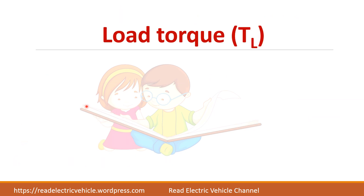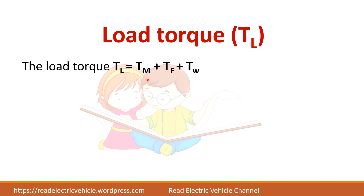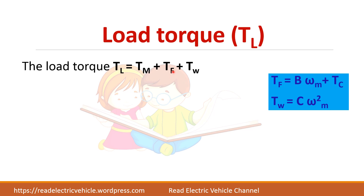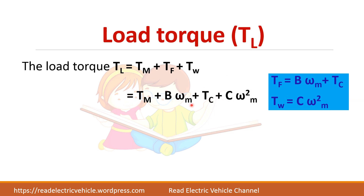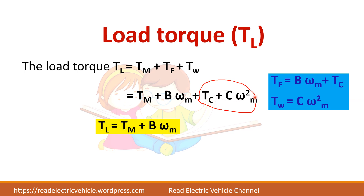To summarize load torque: TL = useful torque (Tm) + friction torque + windage torque. Friction torque = B·ωm + Tc (coulomb) — stiction is normally zero in most drives except traction. Windage torque is proportional to ωm². So the full expression is TL = Tm + B·ωm + Tc + C·ωm². Since friction and windage are often negligible compared to useful torque, this simplifies to TL ≈ Tm + B·ωm.